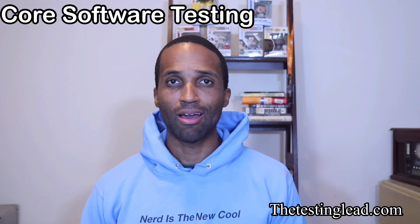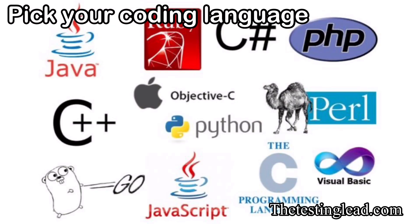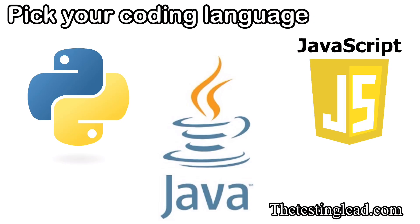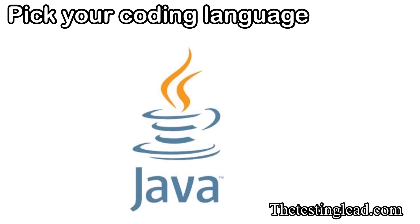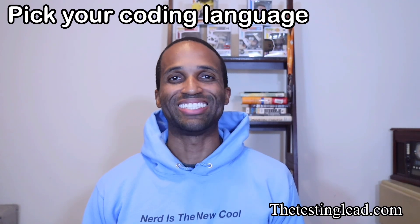Once you have a good understanding of all of that, you're going to pick your coding language. Coding skills are essential for writing automated tests and scripts. Choosing the right language allows you to leverage various testing frameworks and tools effectively. The most popular choices are Python, Java, and JavaScript. Python is known for simplicity and readability. Java is widely used in enterprise environments with powerful testing frameworks. JavaScript is ideal for web applications. Python is the easiest to learn and it's very versatile.